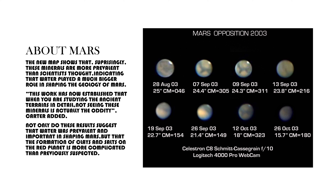The new map shows that, surprisingly, these minerals are more prevalent than scientists thought, indicating that water played a much bigger role in shaping the geology of Mars. This work has established that when studying ancient terrains in detail, not seeing these minerals is actually the oddity. These results suggest that water was prevalent and important in shaping Mars, and that the formation of clays and soils on the Red Planet is more complicated than previously suspected.